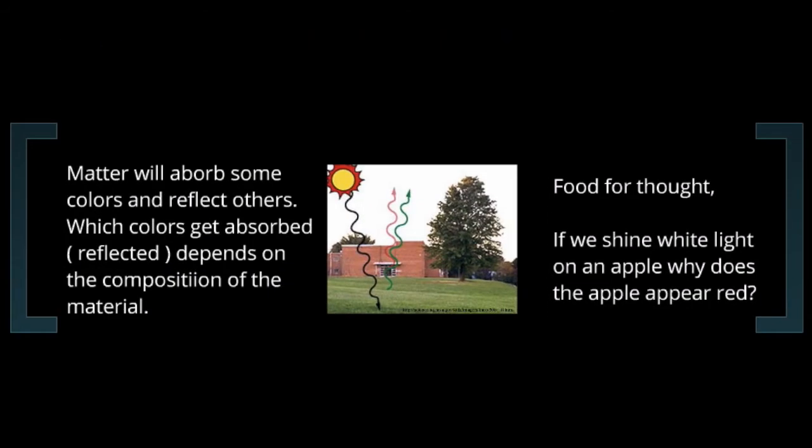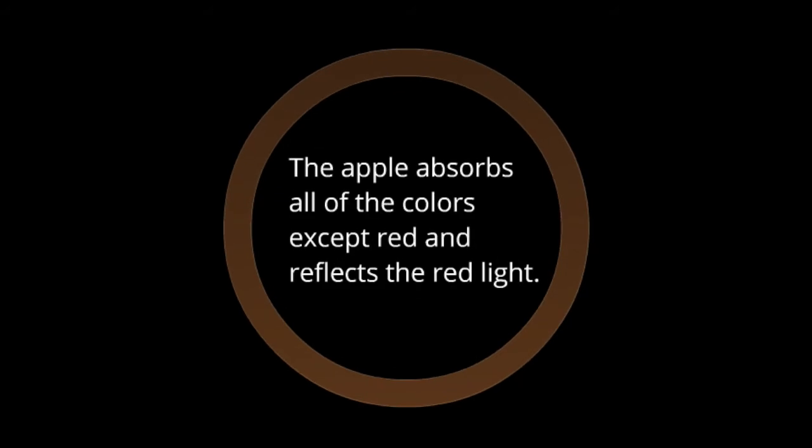We know that matter will absorb some colors. Different materials interact differently with light. If you look at white light shining on a green lawn, then the lawn is absorbing all of the colors except for the green, which is why the lawn appears green. If I shine white light on an apple, why does the apple appear red? The apple absorbs all of the colors except for the red, and it reflects the red light. That's a key thing to remember—different materials interact with light in different ways.